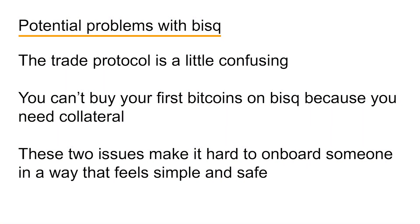Throughout this video, I've sung the praises of BISC, and I think it deserves high praise because, in my opinion, it is the best, most private way to buy bitcoins available. But I also want you to know some of the pitfalls. BISC is not perfect. One of the downsides of BISC is that the trade protocol is a little confusing. At its foundation, it could rest entirely on incentivized cooperation, but instead there's also a mediation and arbitration process in the event of a dispute. There's also the issue of collateral — you can't really buy your first bitcoins on BISC because you have to already have enough bitcoins to put up collateral for your trade.